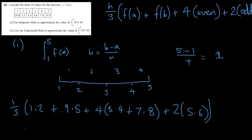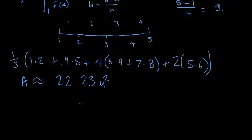Now if we plug this into the calculator, we get: 1 over 3 times (1.2 plus 9.5 plus 4 times (3.4 plus 7.8) plus 2 times 5.6), which gives approximately 22.23 units squared in decimal form. In the test I advise you to use fractions to leave an exact form, so the fraction would be 667 over 30. This curvy equals sign means approximately equal to.